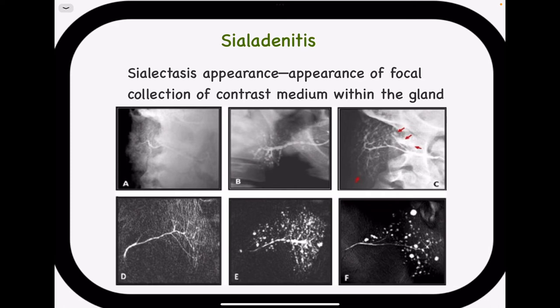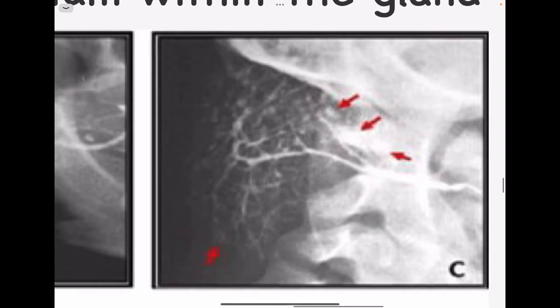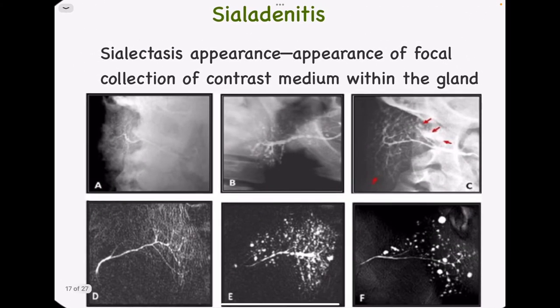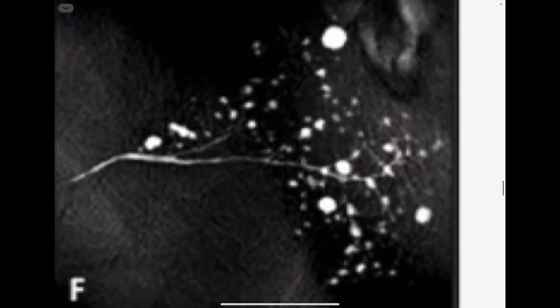The next pathological condition is sialadenitis — inflammatory enlargement of the salivary glands — more commonly seen in parotid and submandibular glands. In sialography, sialadenitis produces a sialectasis appearance, which is the appearance of focal collection of contrast media within the gland. You can see tiny dots of radiopaque dye — this focal collection within the gland is the hallmark of sialadenitis.